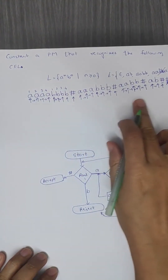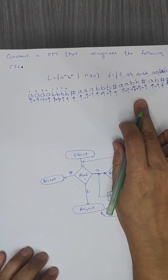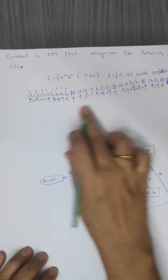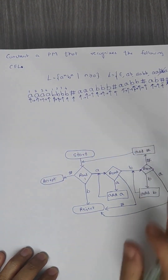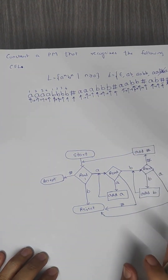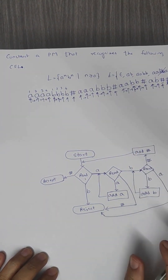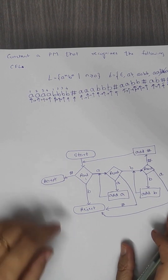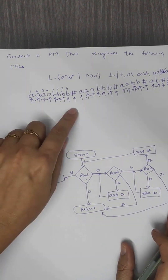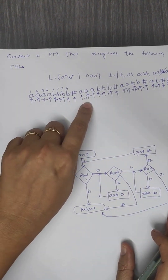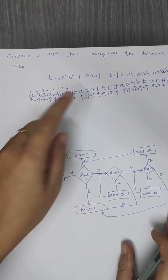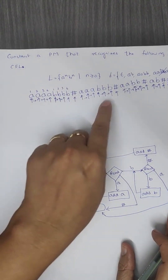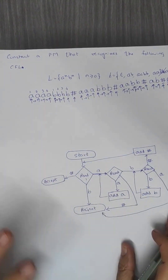This is how the Post Machine works. If you have understood the algorithm — how exactly this works — then the concept will be absolutely clear. Just remember: onto the tape, you are going to add the symbols which you will be tracing in the next iteration.